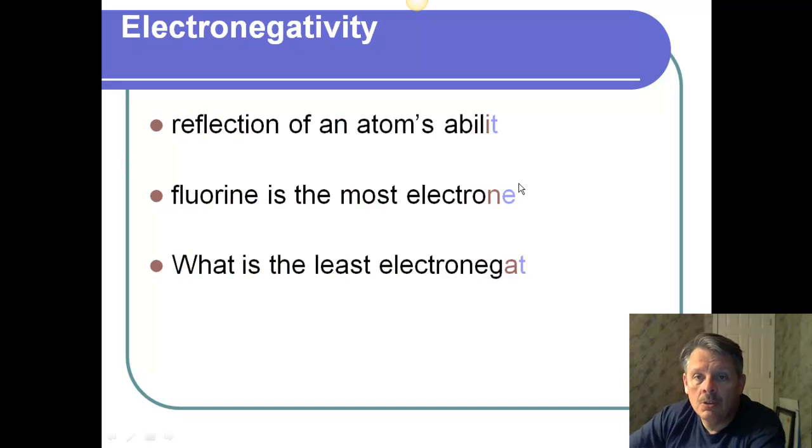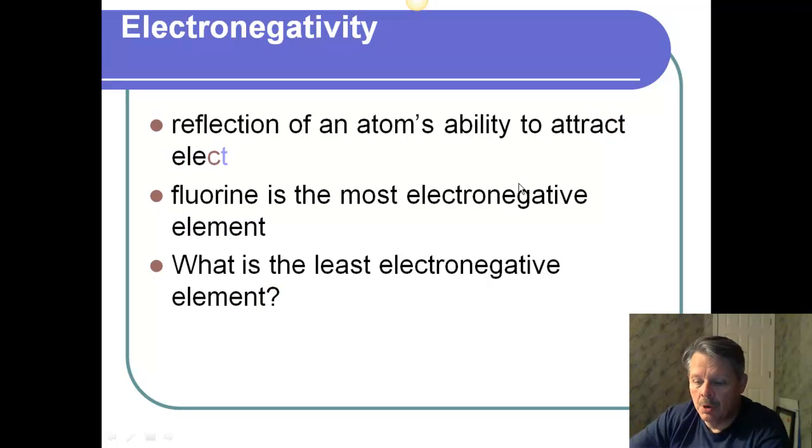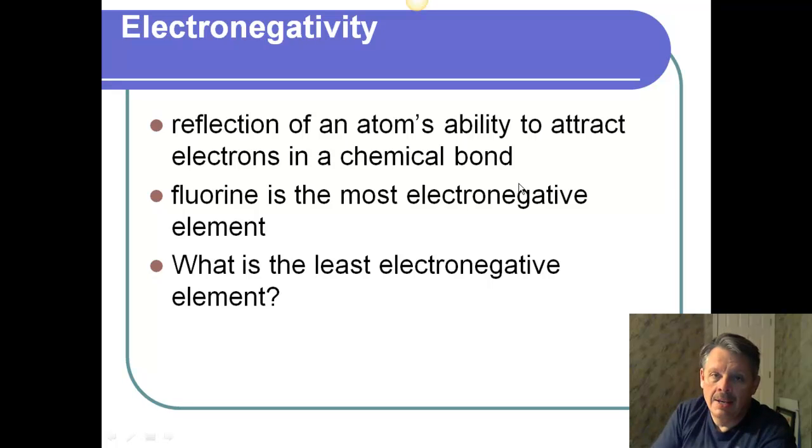So, let's look at the term electronegativity. Electronegativity is simply a measurement. It's a number. It doesn't mean anything aside from just being a pure number. And it is a reflection of an atom's ability to attract electrons in a chemical bond. Notice, the key words here are chemical bond. We need to make sure that we are attracting electrons in a chemical bond.